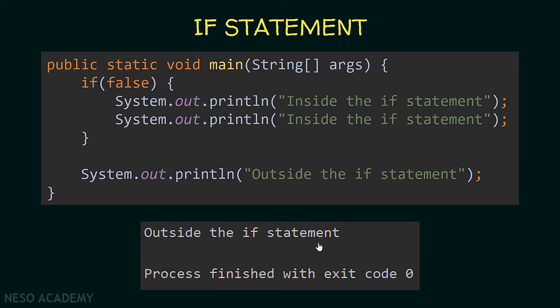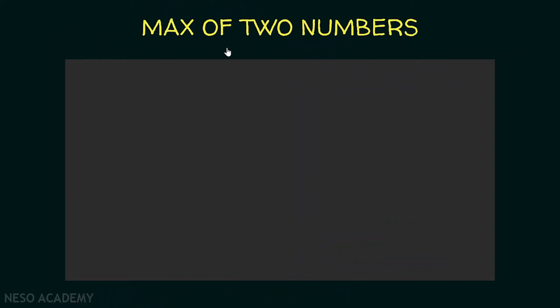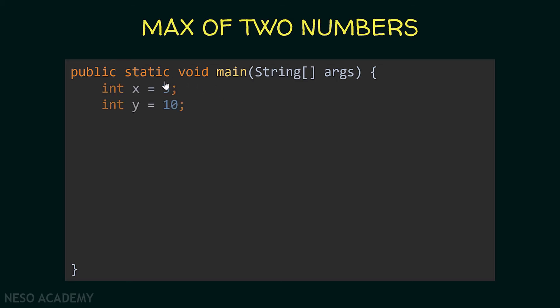You might be wondering why I'm concentrating on this idea so much — it's because a lot of beginners make mistakes regarding this. Now let's continue. Suppose we want to find the maximum of two numbers using the if statement. In our main method we have two variables, x and y, where x is 5 and y is 10. Pause the video and try writing a program that prints the maximum between x and y using if statements.